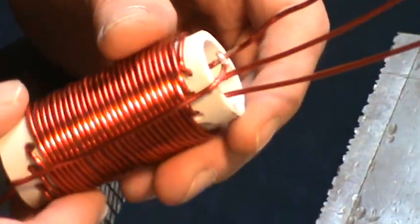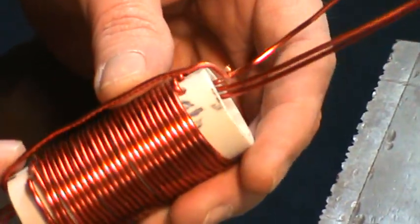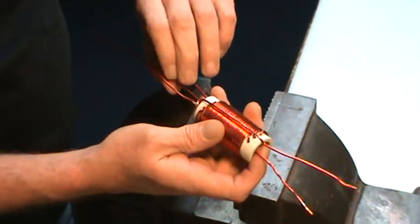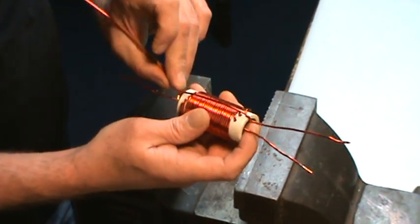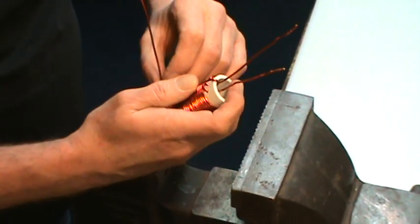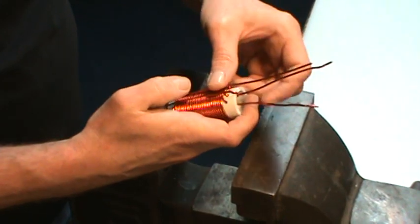Trim that off. So now it looks like that. Now I'll flip the other side around and bend this up towards the opposite lead over here.